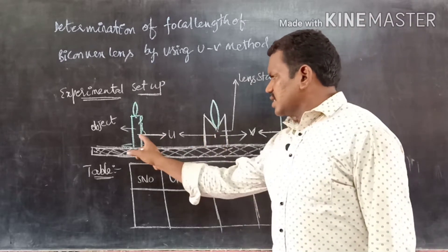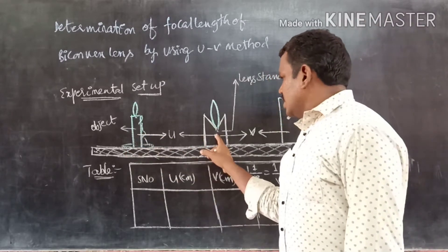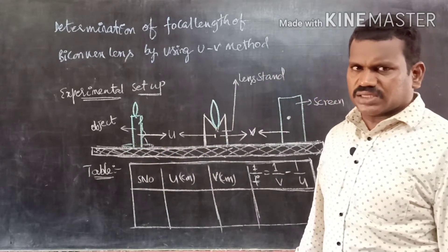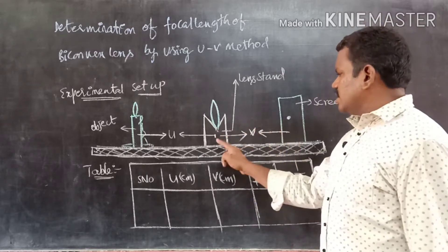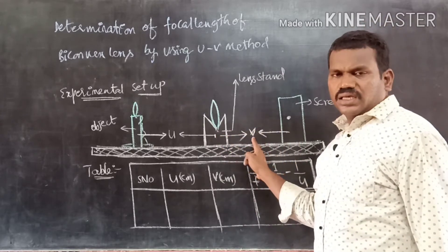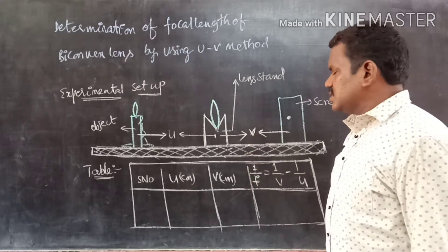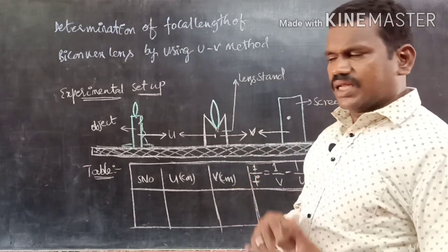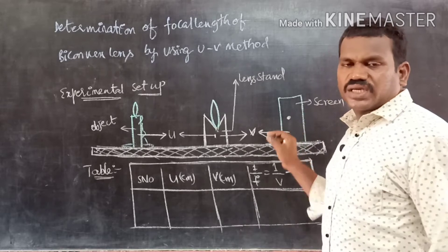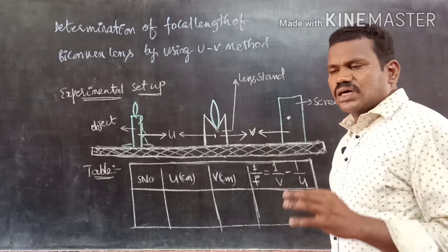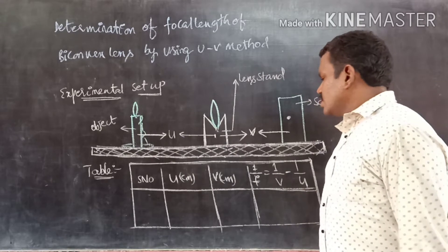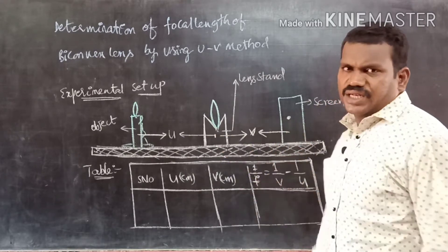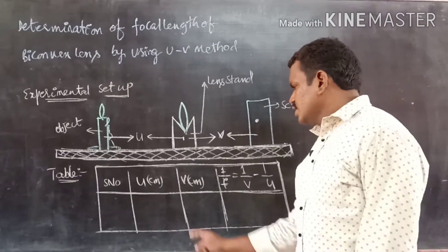Now we take the distance between the lens stand and the object — this is called the object distance. We should place the screen on the back side of the lens stand and then move the screen slowly away from the lens. At a particular distance, we can get a small, sharp image of the candle. By measuring the distance between the lens stand and the screen, we can calculate the image distance.